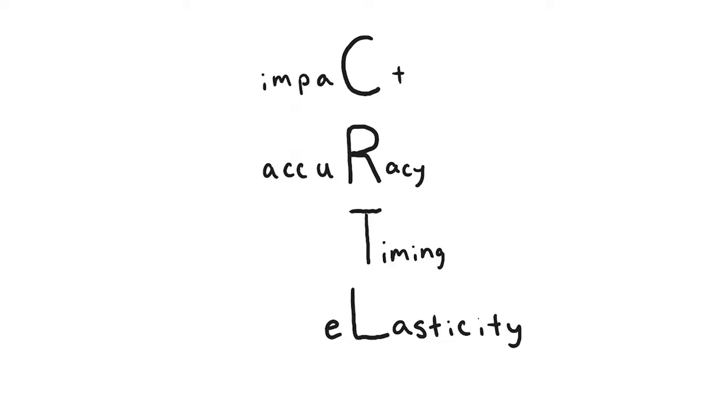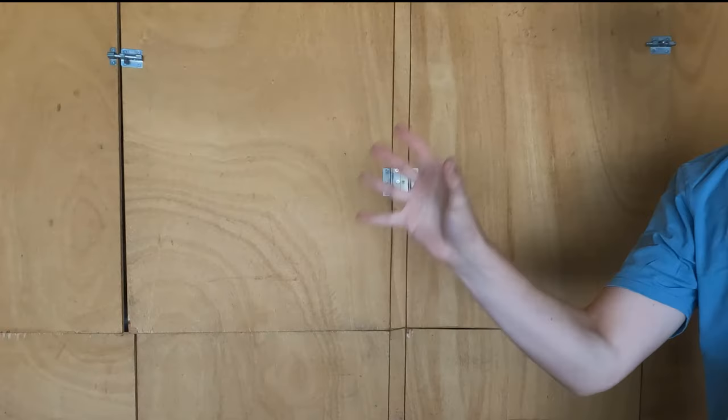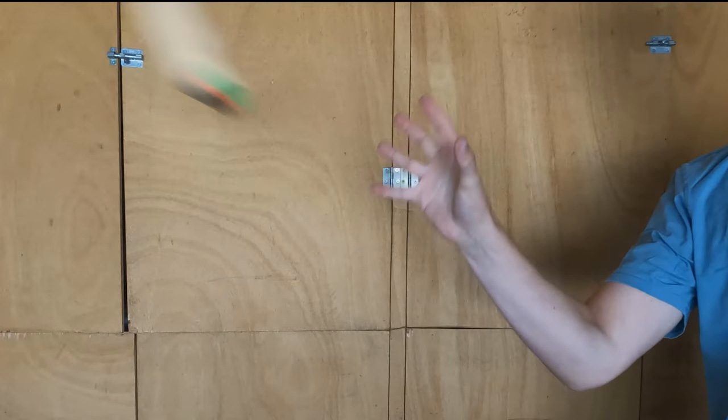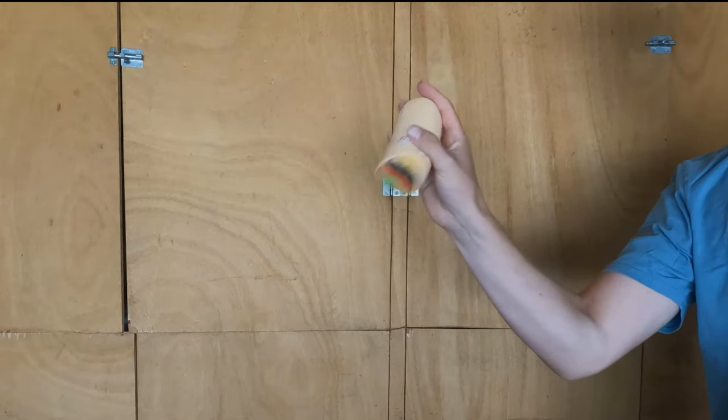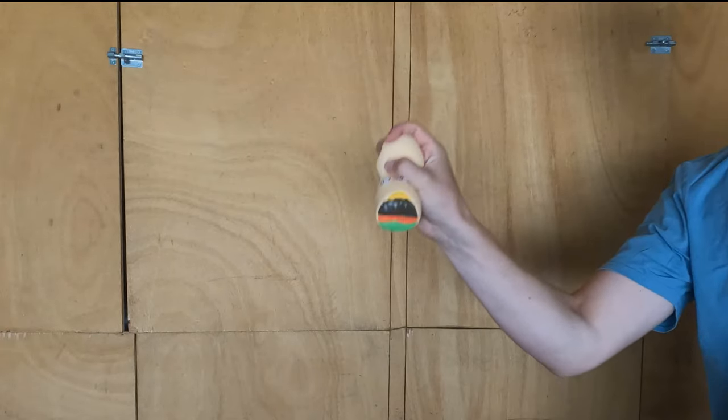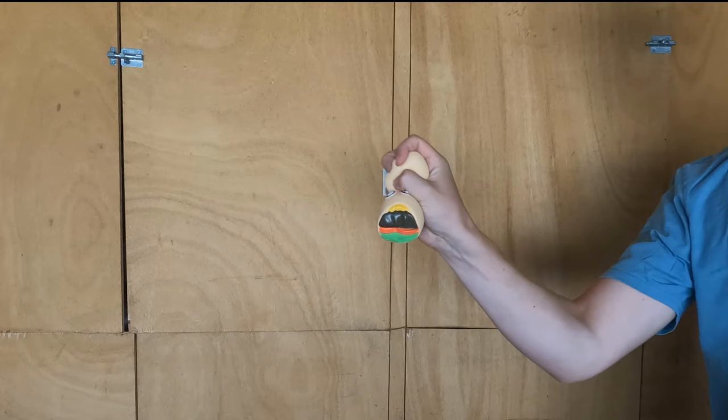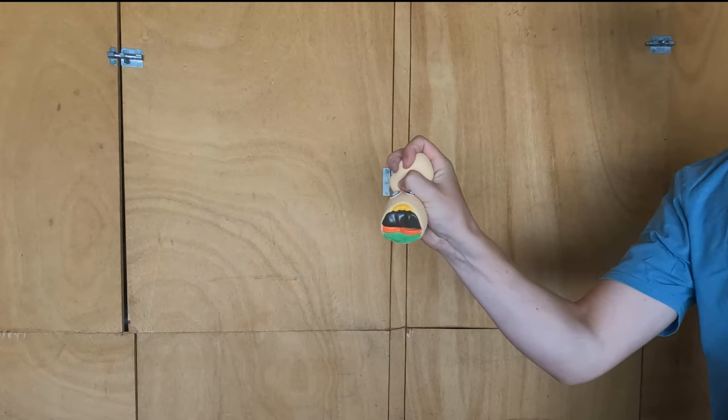Elasticity. Cradling the object isn't as important when the object is squishy, like this burrito, because it will deform around your hand or can be grabbed by squeezing.